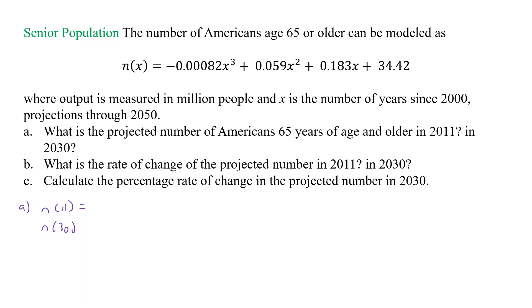Go down this time, and then plus 0.059 times 11 squared, and then plus 0.183 times 11 plus 34.42, and that one gives us 42.48. I'll just write it all down here, so 42.48058, and that's going to be million people.